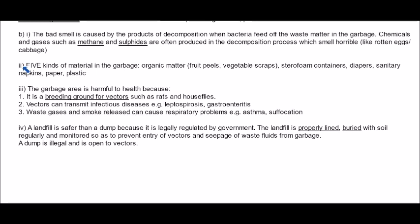For five kinds of material typically found in garbage, you can mention: organic matter such as fruit peels and vegetable scraps, Styrofoam containers that typically store food, diapers, sanitary napkins, paper, and plastic. There are all kinds of materials you could mention that you would find in garbage.